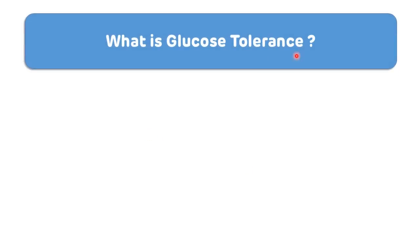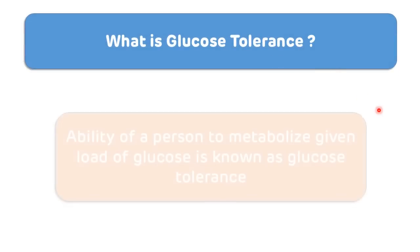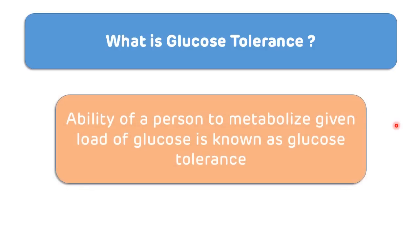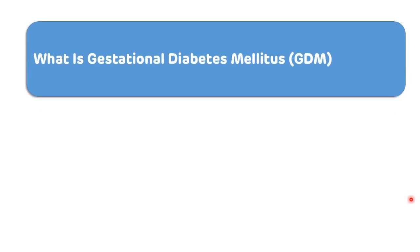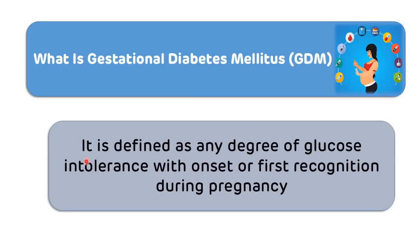We should know what glucose tolerance is. Glucose tolerance is defined as the ability of a person to metabolize a given load of glucose. Gestational diabetes mellitus is defined as any degree of glucose intolerance with onset or first recognition during pregnancy.